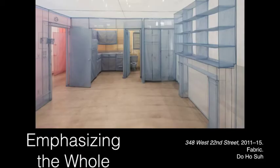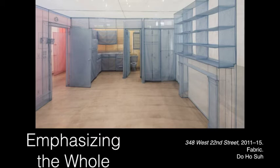Another piece about home. This was made by Do-ho Suh, an immigrant artist in the United States. He was not born here and lived most of his life in another country. When he came here, he really missed his old home, his family, his friends, the place where he grew up. He started making these fabric pieces that recreated, life-size, his old apartment. Emphasizing the whole over the parts, this kind of blue, see-through, dreamy fabric gets us the feeling of the apartment — it's actually an exact replica, without being a specific part of it.